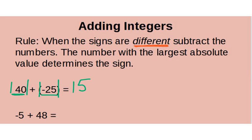Let's look at the next example: negative 5 plus positive 48. The signs are different, so I subtract: 48 minus 5 is 43. The absolute value of negative 5 is 5, and the absolute value of 48 is 48. Since 48 is farther away, that makes my answer positive 43. Pretty simple — hopefully you remember it from last year.